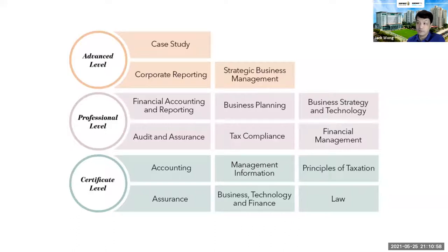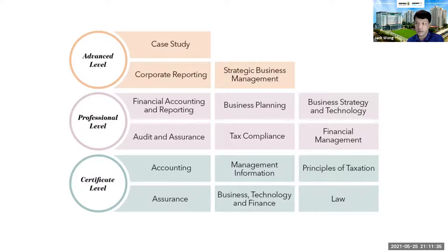Strategic Business Management at the advanced level combines 40% business strategy, 40% financial management, 10% financial accounting and reporting, and 10% audit and assurance. You consider whether to merge with another company, what capital to use, whether to borrow — that's financial management. The target company may be overseas, raising financial reporting compliance questions, and you'd also conduct due diligence through audit and assurance. Four different subjects combined to make a single business decision.